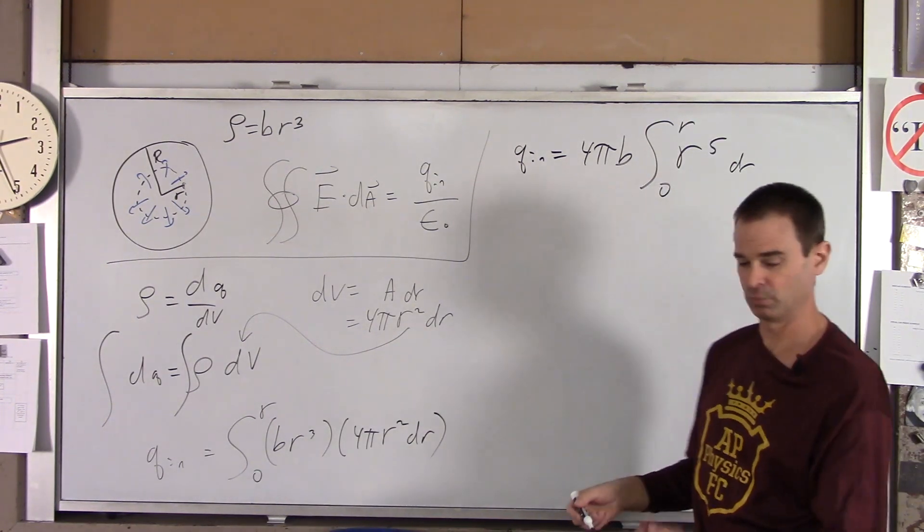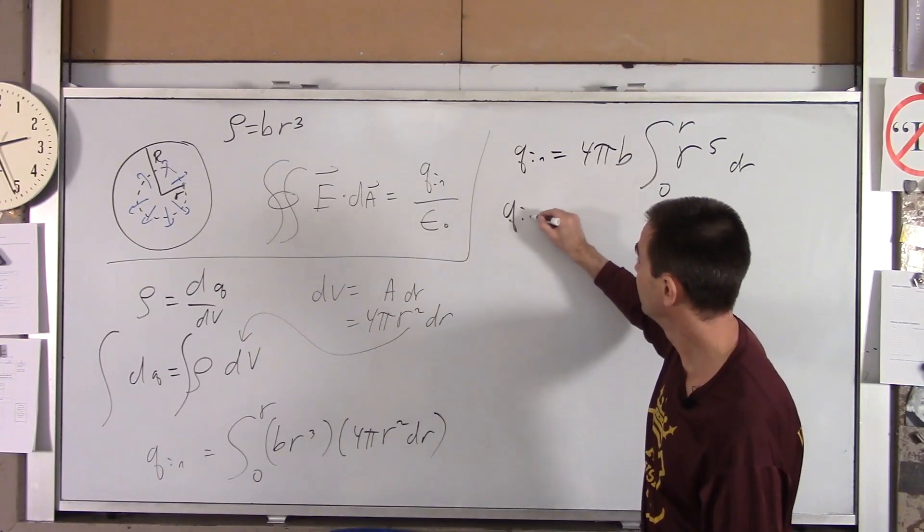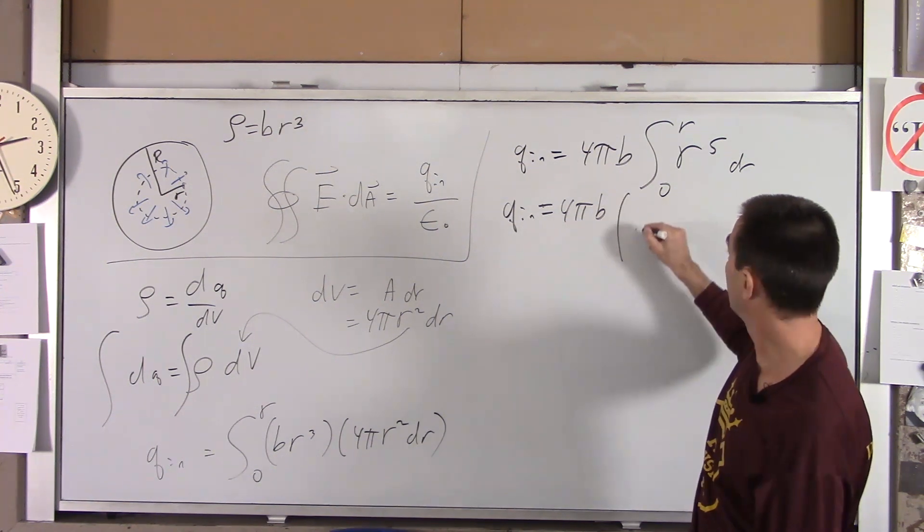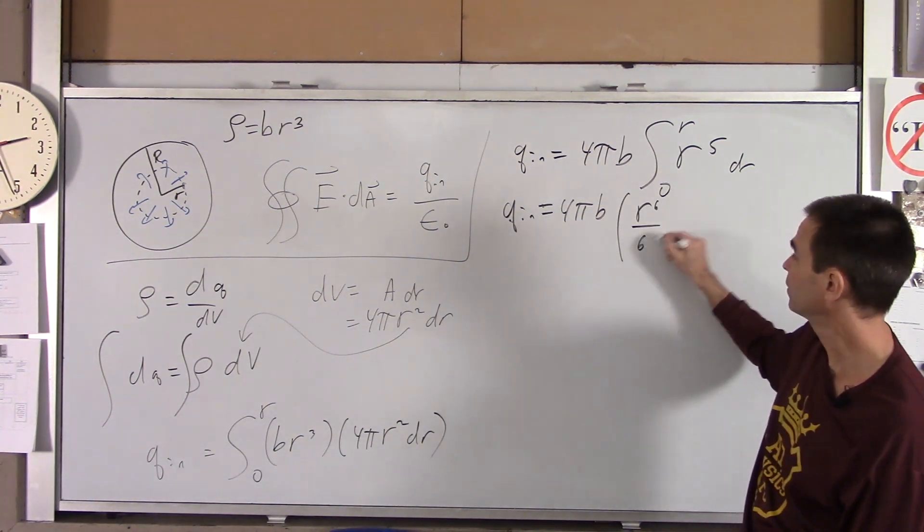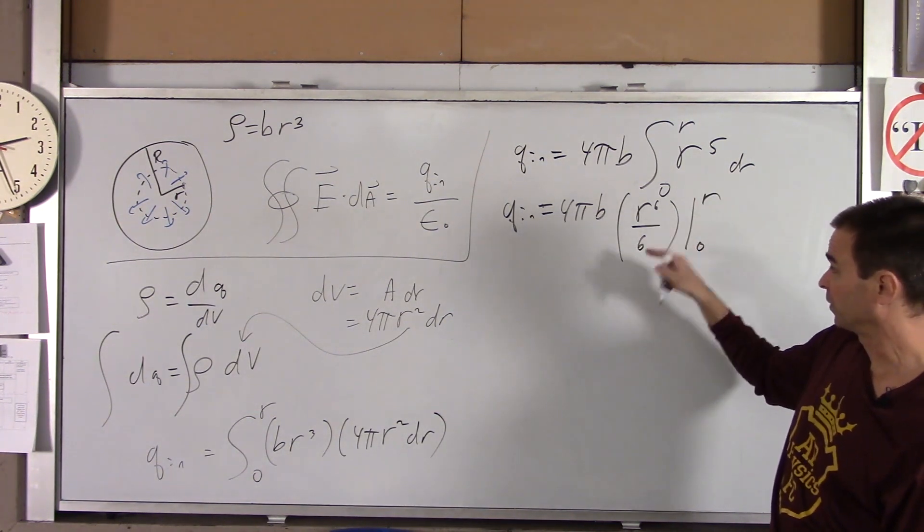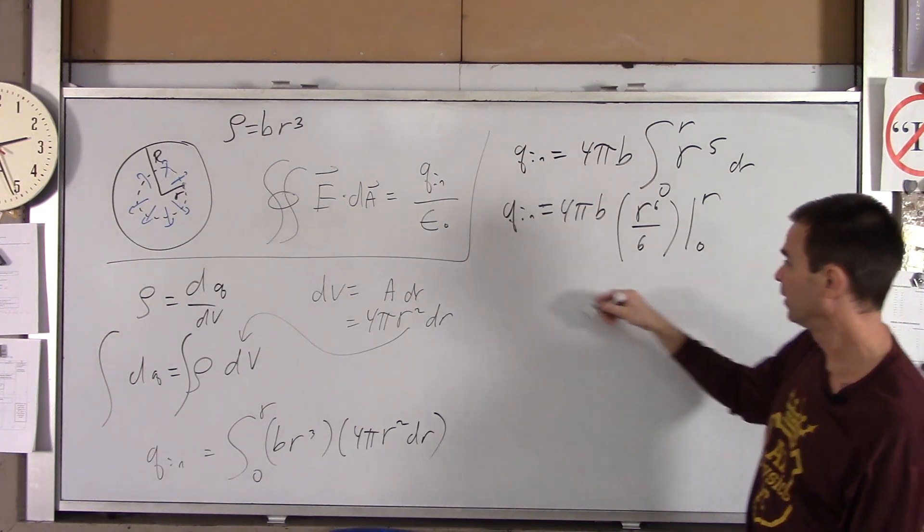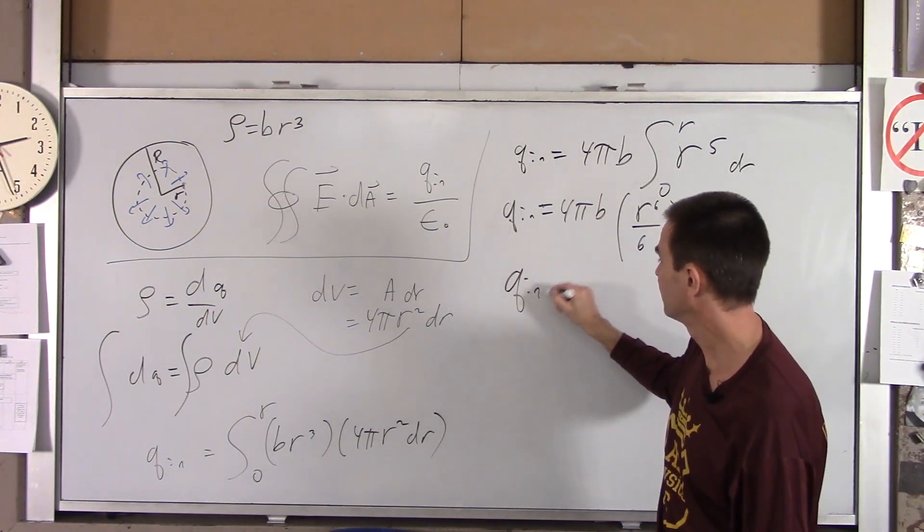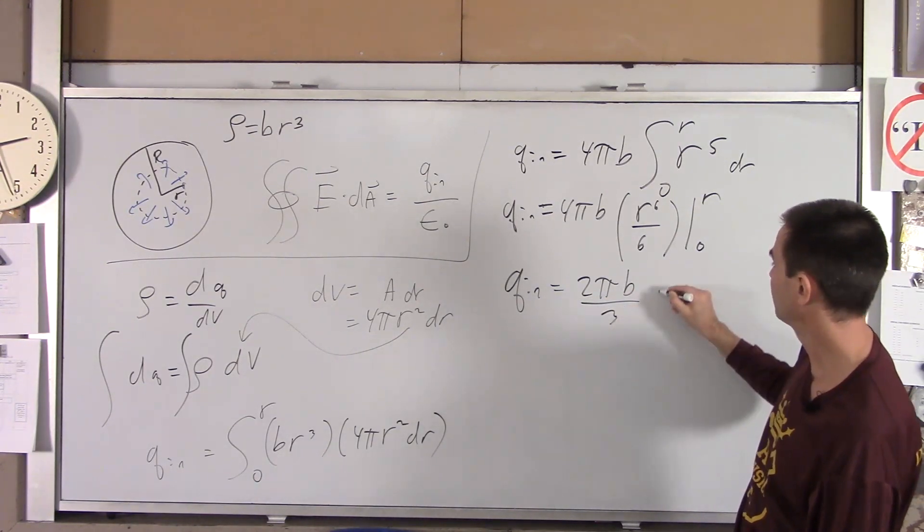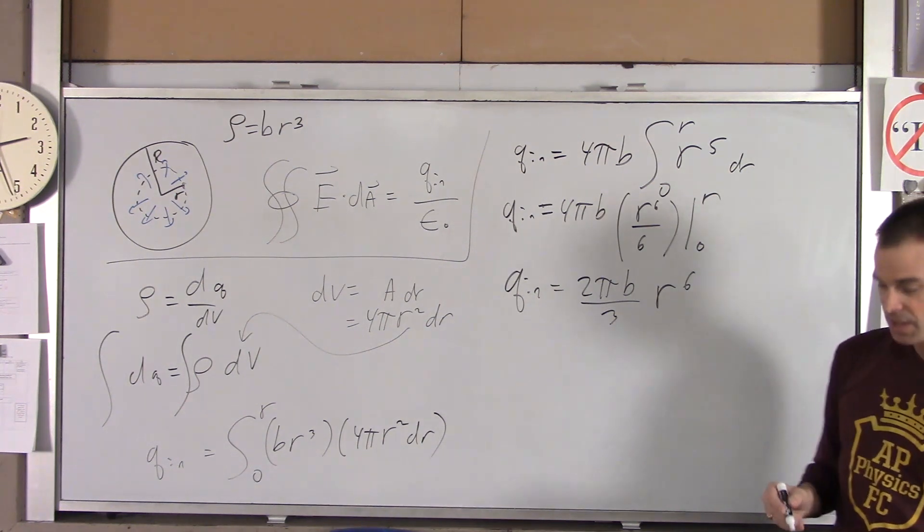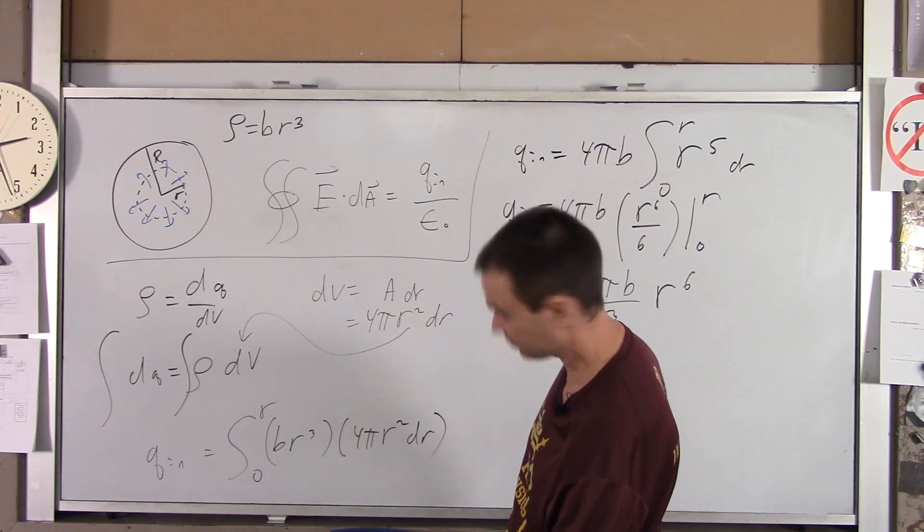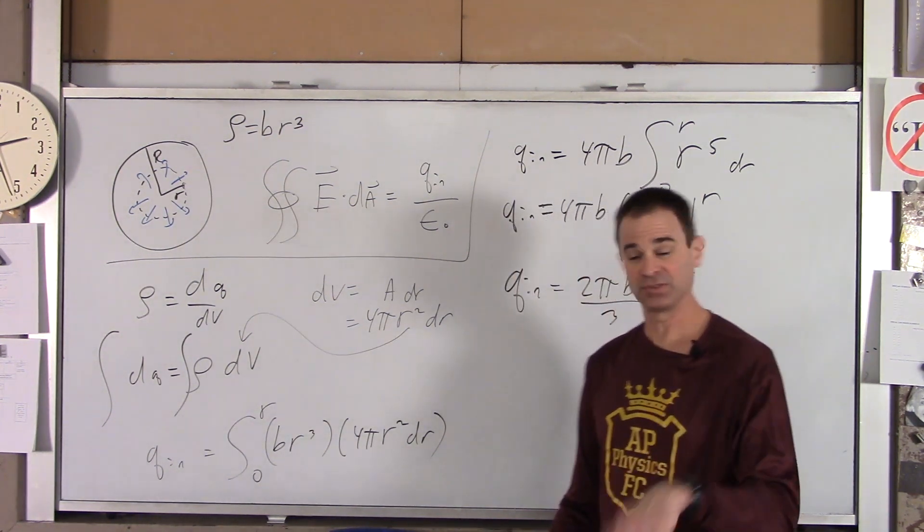I'll finish this up here. So we can pull out the 4 pi and the b. So q_in equals 4 pi b, and we're just integrating r to the third times dr. So integral r to the fifth times dr from 0 to r. So that's just our reverse power rule. So you get q_in equals 4 pi b r to the sixth over 6 from 0 to r, which just becomes r to the sixth.